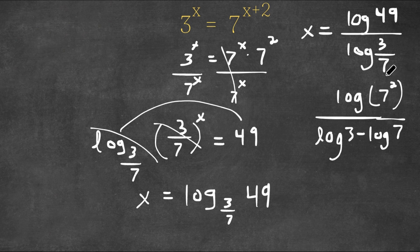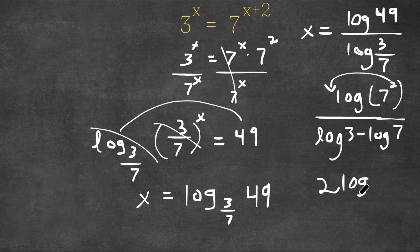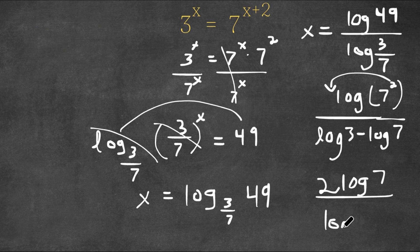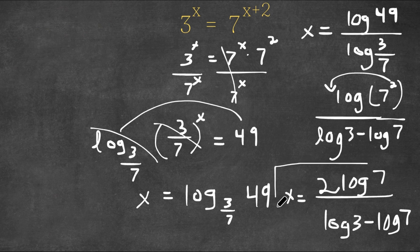And using the exponent rule of logarithms, I can move this exponent to the front of the logarithm, meaning this would be 2 log 7 over log 3 minus log 7. So this is our answer.